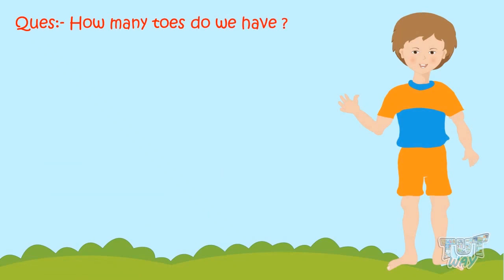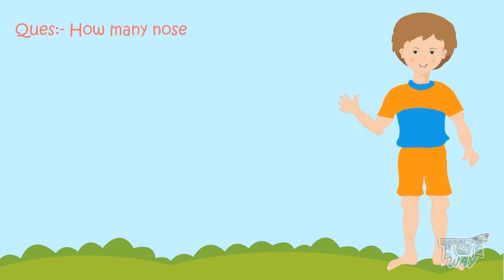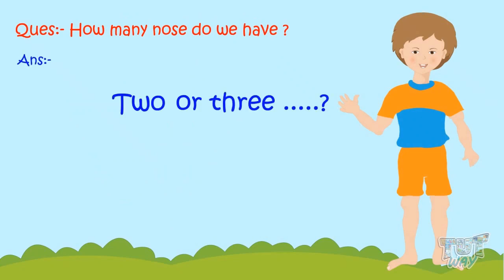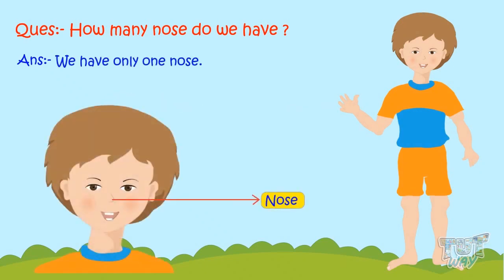How many toes do we have? It's the same as our fingers — five in one foot and five in the other foot, so we have ten toes. How many noses do we have? Two or three? No, we have only one nose.